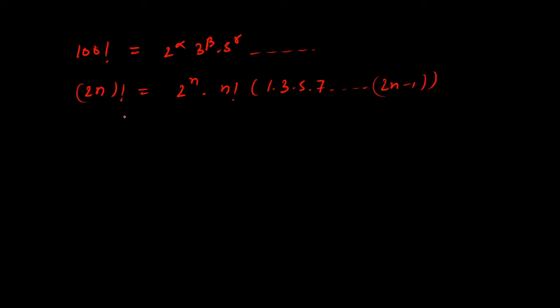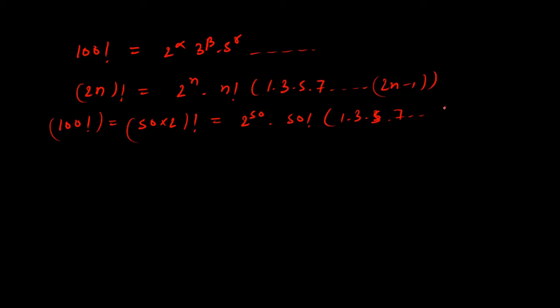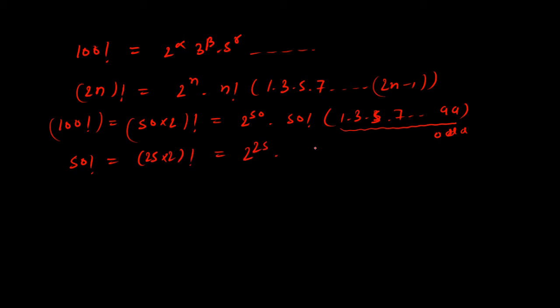Now, 100! can be written as (2×50)!, so here n is 50. Using the formula: 100! = 2^50 × 50! × (1×3×5×...×99). All those odd numbers are not contributing to powers of 2, so we ignore them. Next, we extract powers of 2 from 50!. We write 50! = (2×25)!, so 50! = 2^25 × 25! × (odd numbers). Again the odd numbers don't contribute.